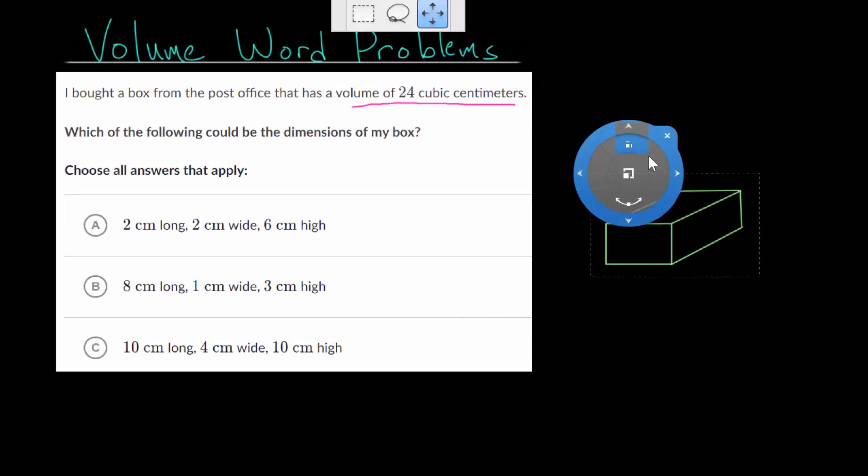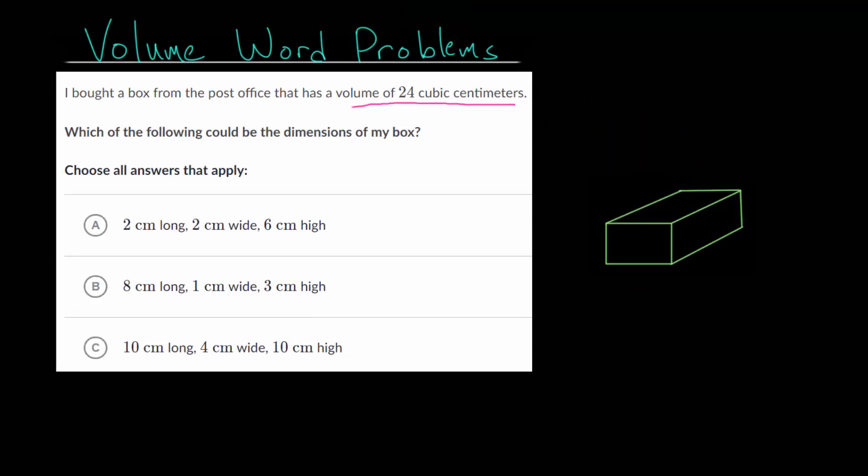If we have a rectangular prism, and let's say that this prism has, for the height we can call that h, for the width let's call w, and it has a length of l. The volume of this rectangular prism is just the product of these three dimensions, the length multiplied by the width multiplied by the height.